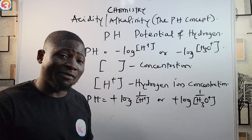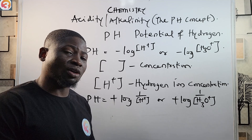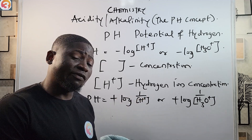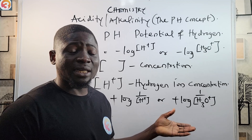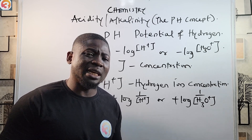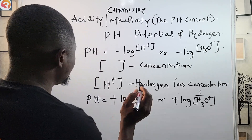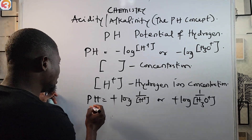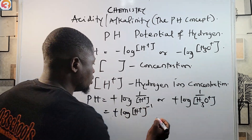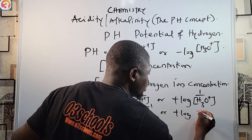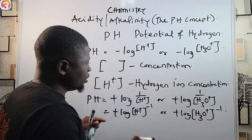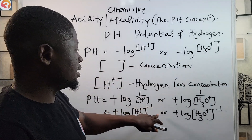If you don't have knowledge of logarithms, there's a topic on logarithms on this channel — go and watch it. Without that knowledge, if a question comes to calculate pH, you will struggle. pH can also be written as positive logarithm of hydrogen ion concentration raised to the power minus one — all these formulas are equivalent.